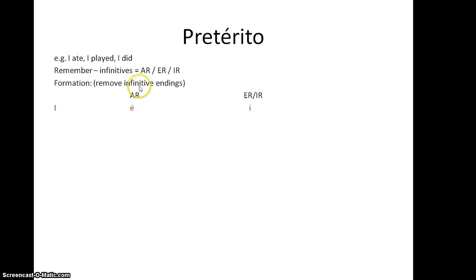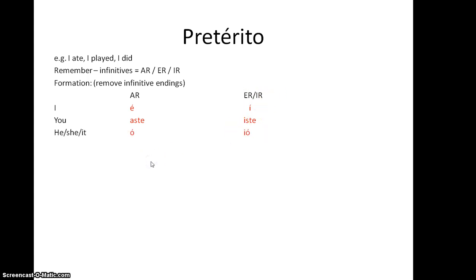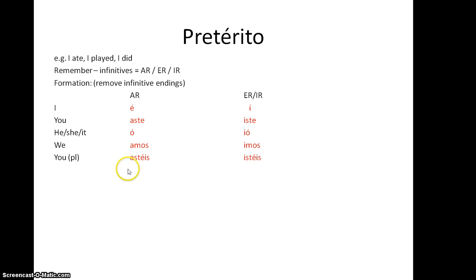For the I-form: AR verbs take an 'í' (with accent); ER and IR verbs take an 'í' (with accent). For the él/ella form, AR verbs take 'ó'; ER/IR take 'ió'. We form takes 'amos' and 'emos.' Note that 'amos' in the present tense is exactly the same as in this past tense. The you-plural form takes 'asteis' and 'esteis.' They takes 'aron' and 'ieron.'